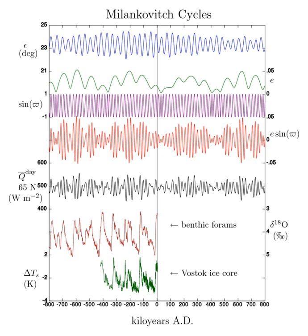Axial precession is the trend in the direction of the Earth's axis of rotation relative to the fixed stars, with a period of 25,771.5 years. This motion means that eventually Polaris will no longer be the North Pole star. It is caused by the tidal forces exerted by the Sun and the Moon on the solid Earth; both contribute roughly equally to this effect. Currently, perihelion occurs during the Southern Hemisphere's summer. This means that solar radiation due to axial tilt inclining the Southern Hemisphere toward the Sun and the Earth's proximity to the Sun both reach maximum during the summer and both reach minimum during the winter. Their effects on heating are additive, which means that seasonal variation in irradiation of the Southern Hemisphere is more extreme.